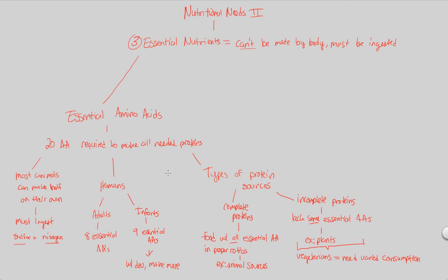That covers our look at essential amino acids. Another essential nutrient that must come from the diet — one our body can't make — are essential fatty acids. Essential, again, means our body can't make it; we must ingest them.